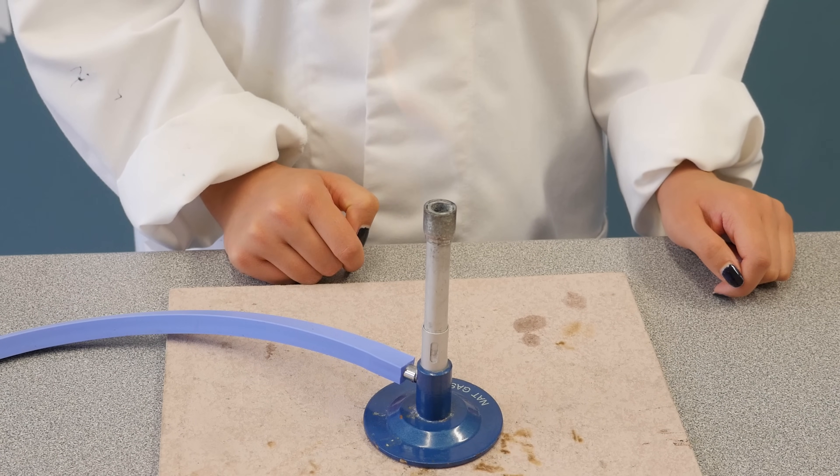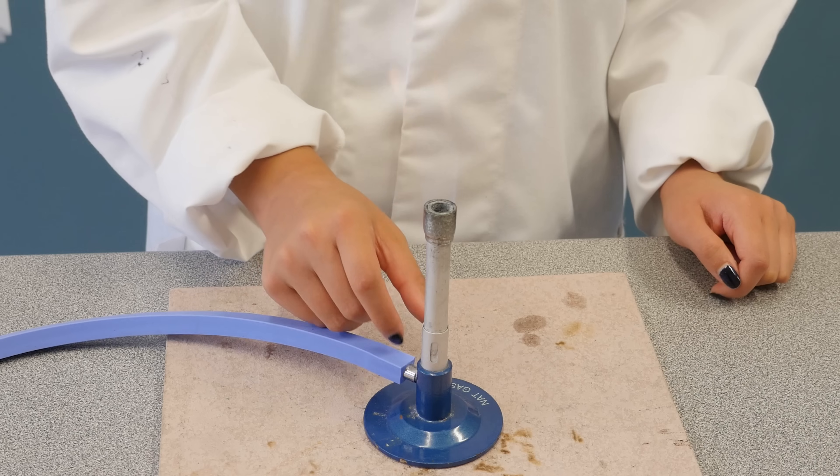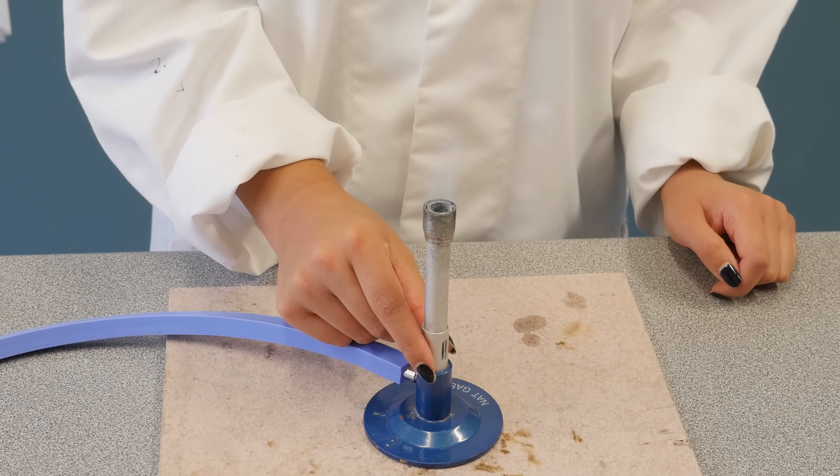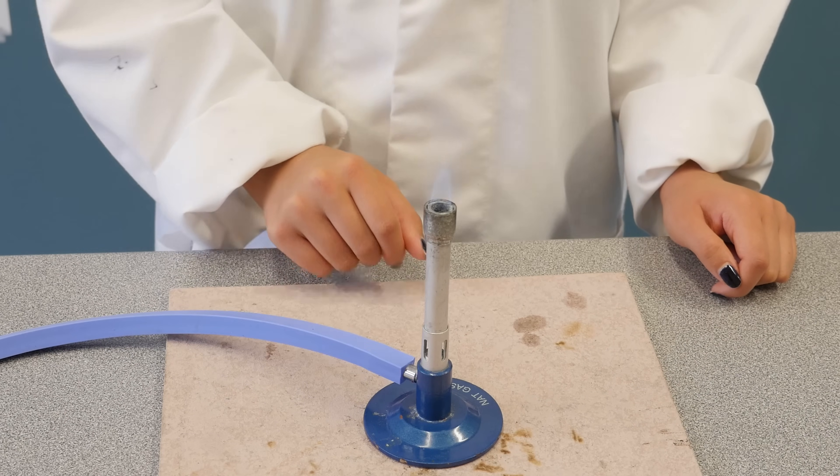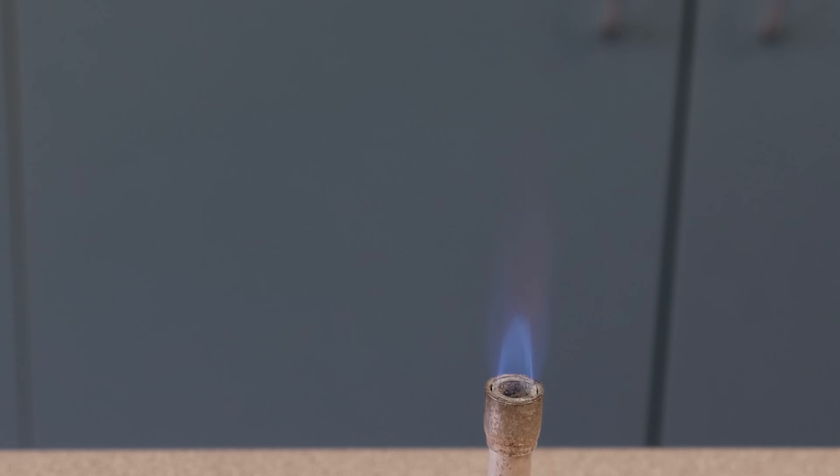To get a hotter flame, we need to mix in more air. To do this, turn the collar to open the air hole. You will now have a blue flame with a bright blue inner core. The hottest part of the blue flame is here, at the tip of the cone.